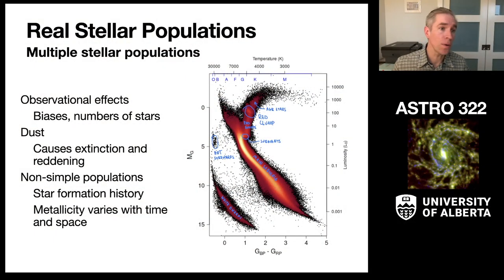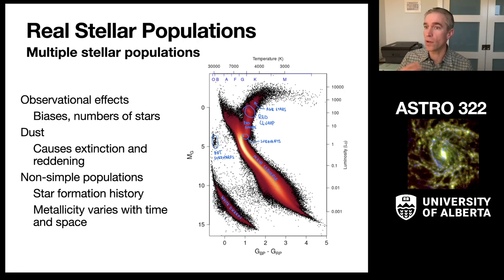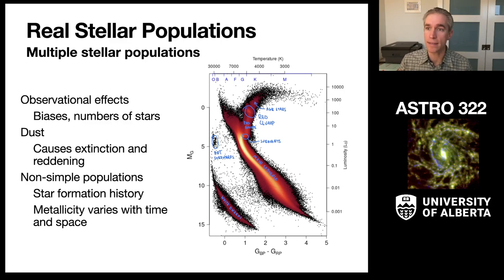Hi everyone. Welcome back to another fine week in Astro 322. This week we're going to be talking about real stellar populations. When we talk about real stellar populations, we're going to move away from the simple stellar populations of clusters with fixed metallicity and a single formation time, and move into what happens when we consider stars in the so-called field of the galaxy — all over, mixed in, a bunch of simple stellar populations added together.